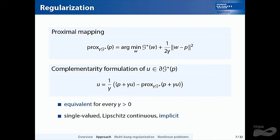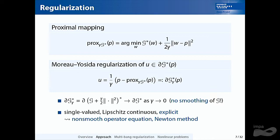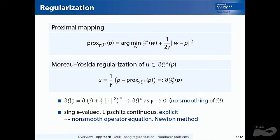The equation is implicit because U appears on both sides, which is a problem in function spaces. The standard remedy is the Moreau-Yosida regularization: if you take the right-hand side without U, this coincides with the sub-differential of G*_γ at P. This gives an explicit, single-valued equation, Lipschitz continuous with constant 1/γ. Of course, this is no longer equivalent — an approximation error is introduced — but one can show this error goes to zero as γ → 0.